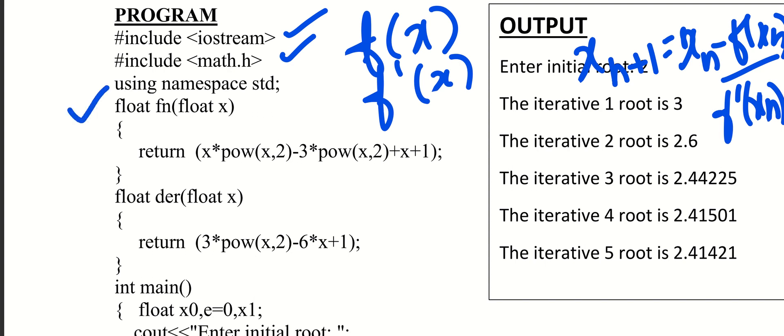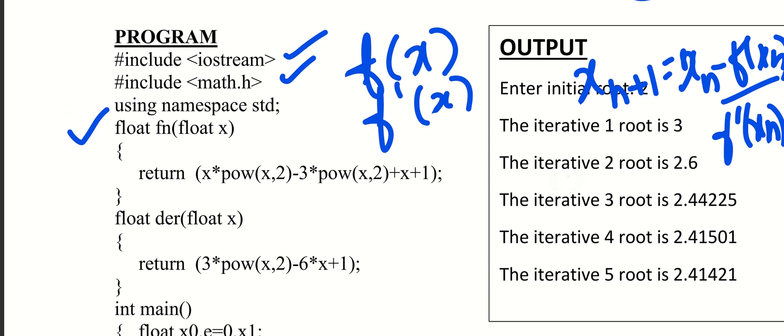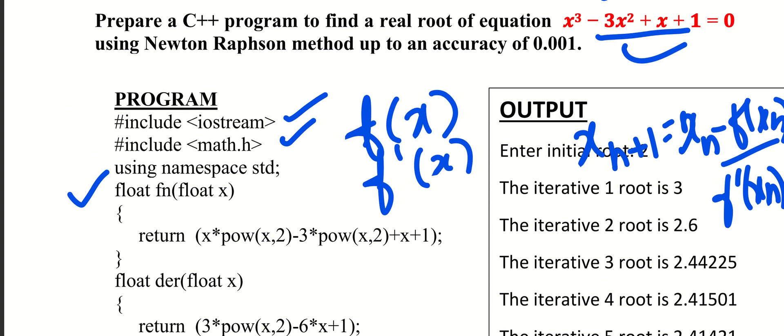That function is fn, a float of x. That equation is x cube minus 3x square plus x plus 1.